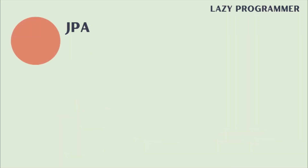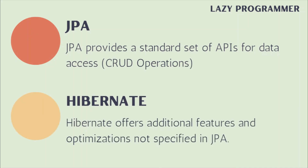JPA provides a standard set of APIs for data access, such as CRUD operations — that is, create, read, update, and delete. Hibernate offers additional features and optimizations that are not specified in JPA.